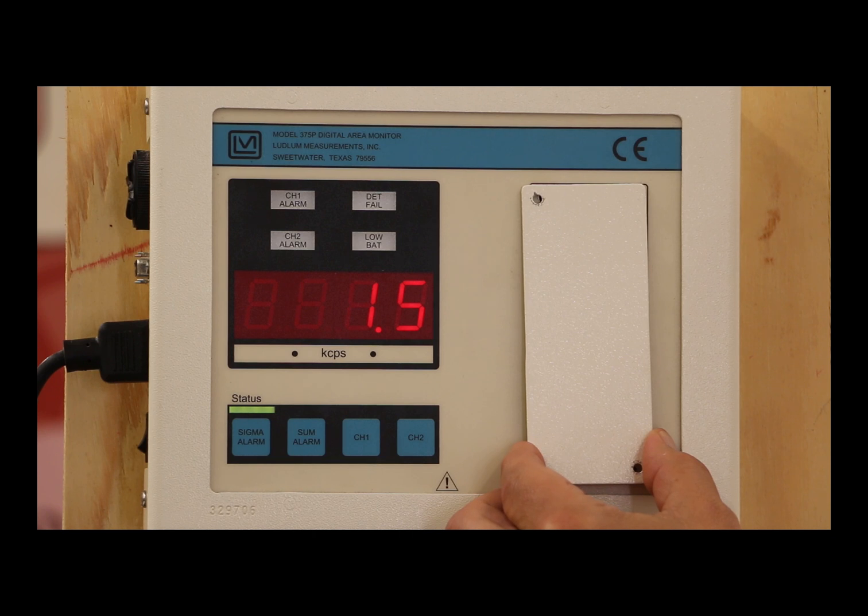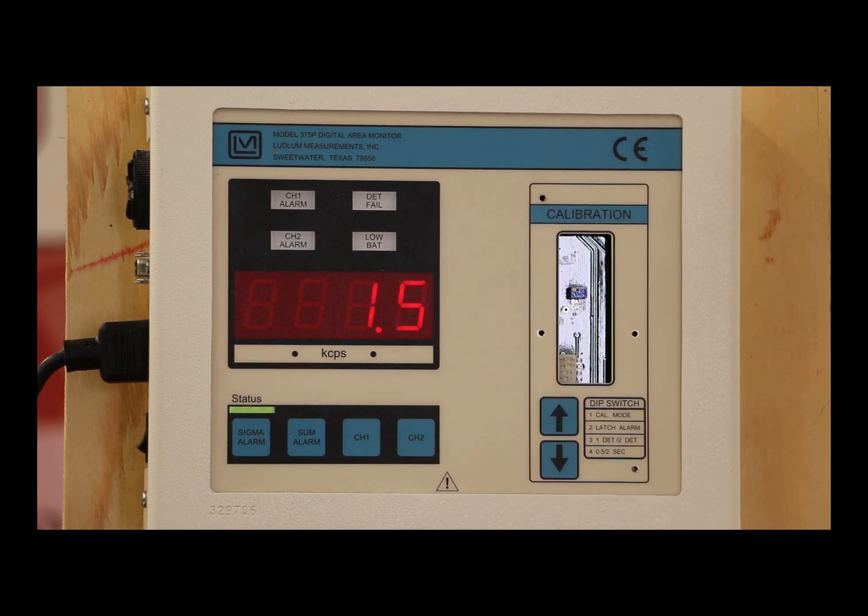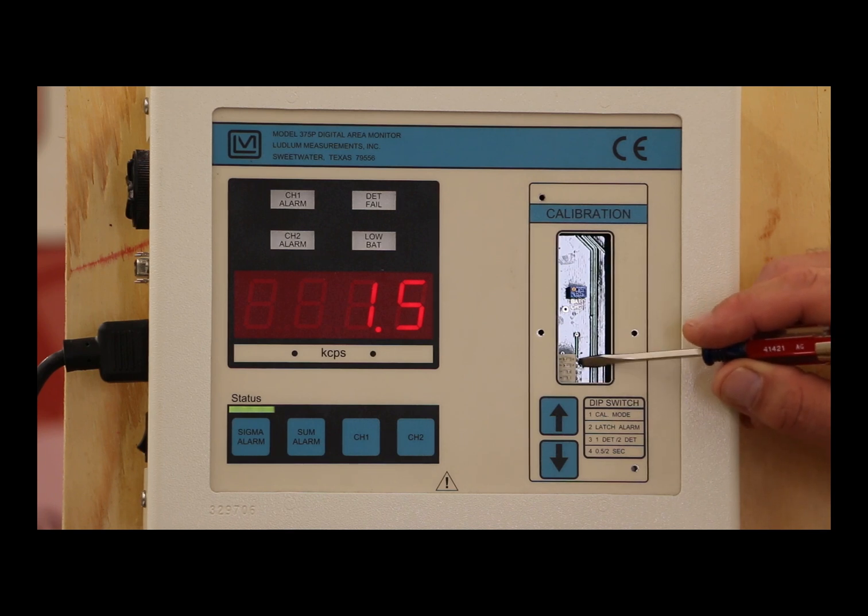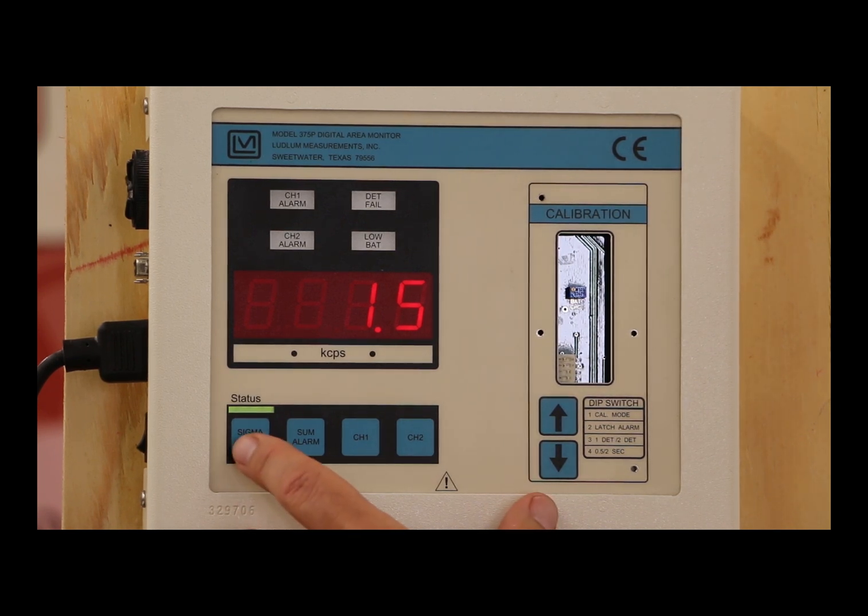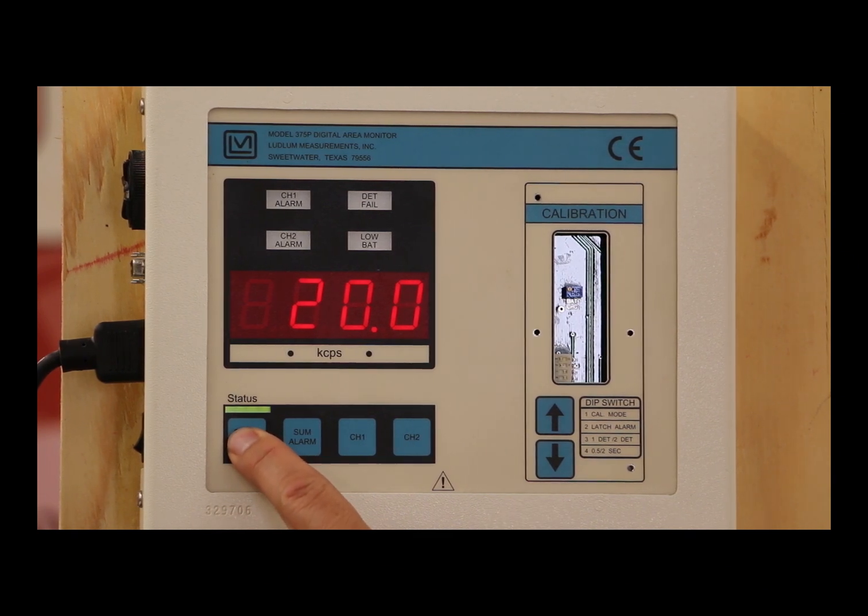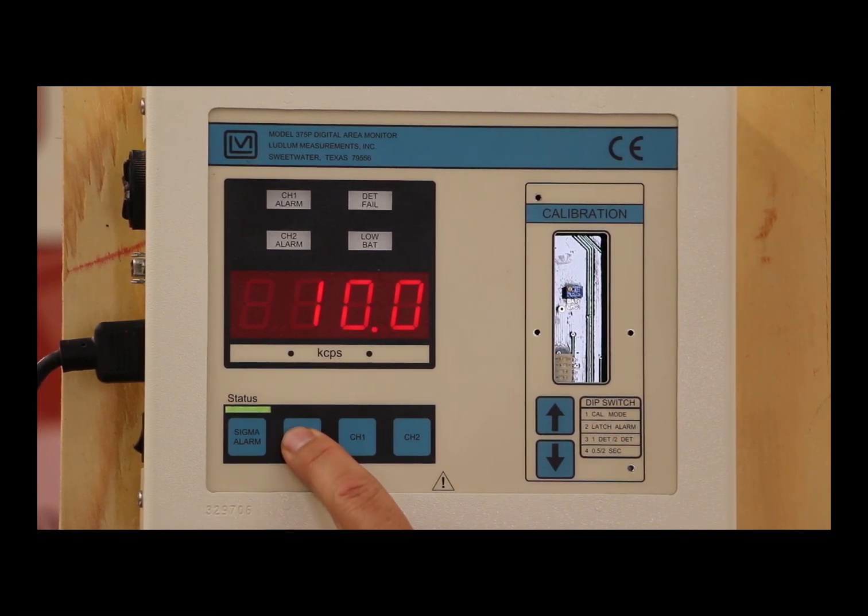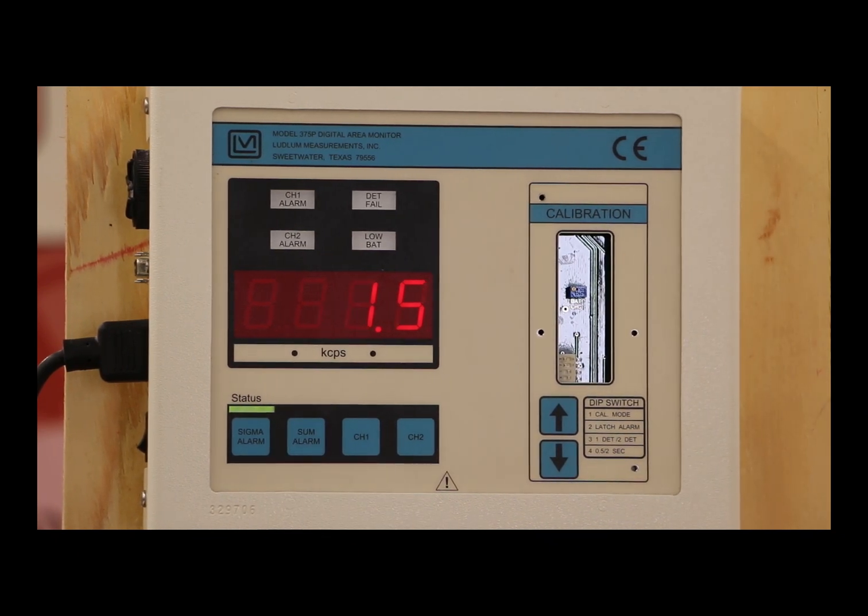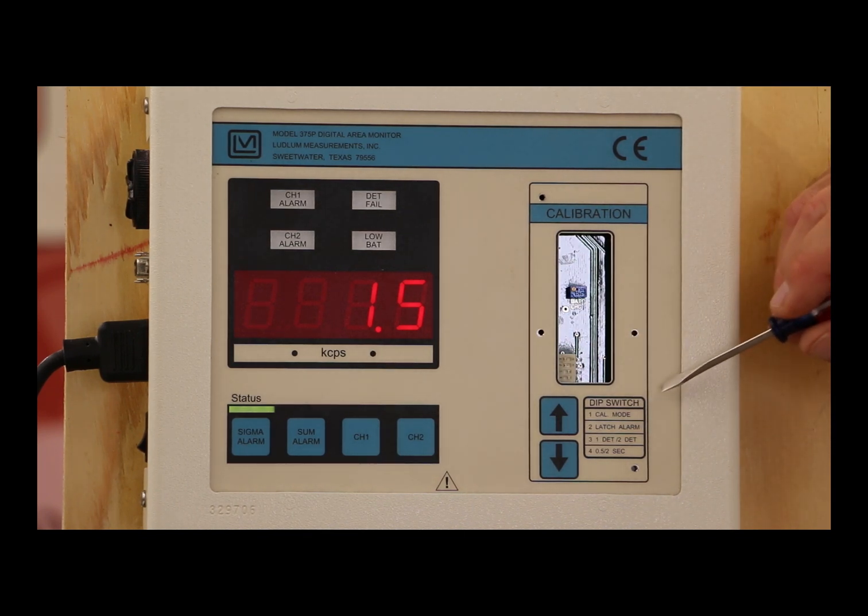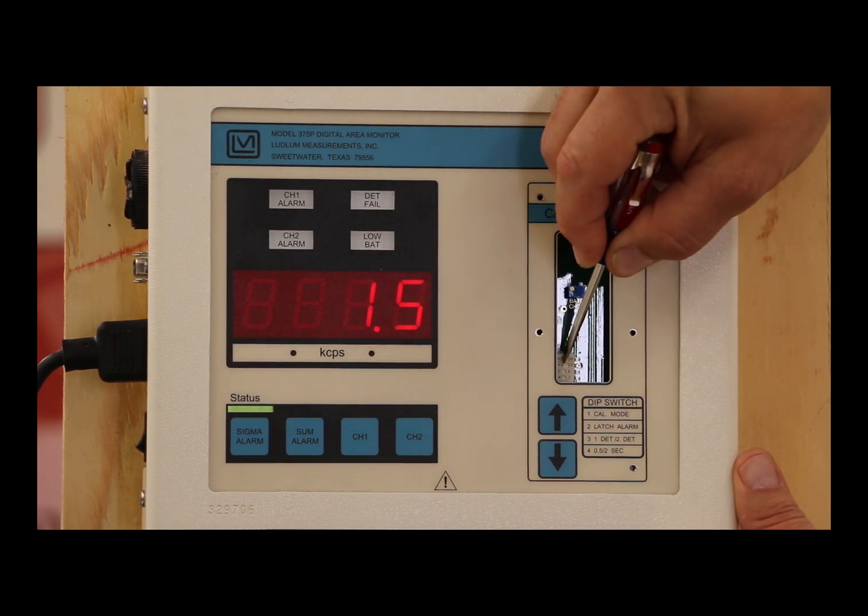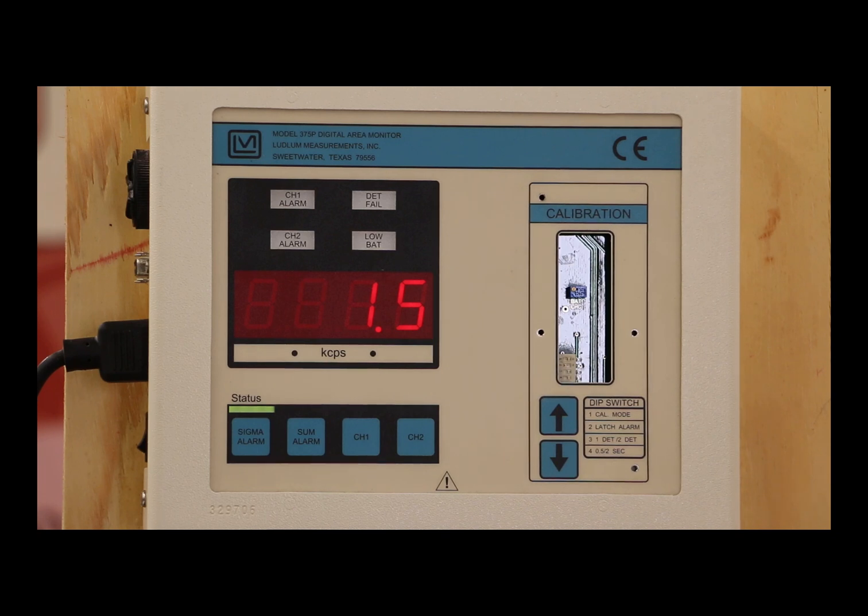Now let's talk about the setup of the 375P. If I remove the calibration cover, you see that we've got four different dip switches, and two arrows to move the parameter numbers. I'll show you how to set this up. Because we've got two alarms in there. As you remember, we have the sigma alarm, currently at 20, and the sum alarm, which is set at 10,000 counts per second. We have four different dip switches here. As you can see, we label them here. The first one is the CAL mode. Right now, the instrument is in CAL lock. So I can't change any of the parameters. In order to change the parameters, I need to move that switch over to the right. And now I can change the parameters.